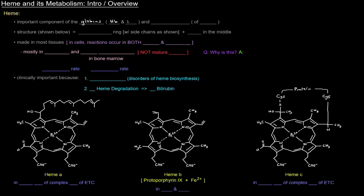Heme is also an important component of the cytochromes, which we saw in the electron transport chain. They're also an important component of CYP450 enzymes.